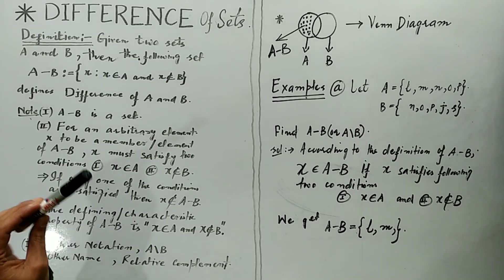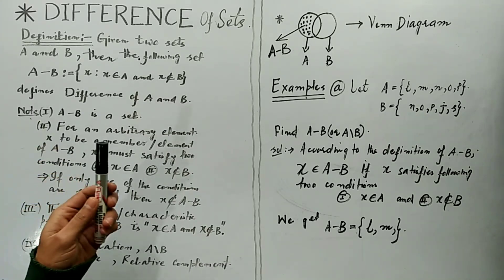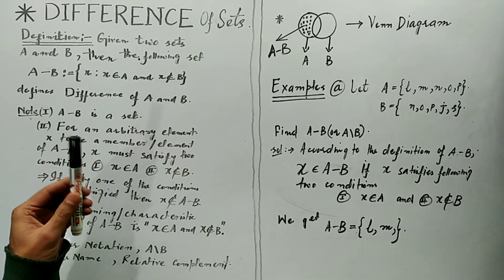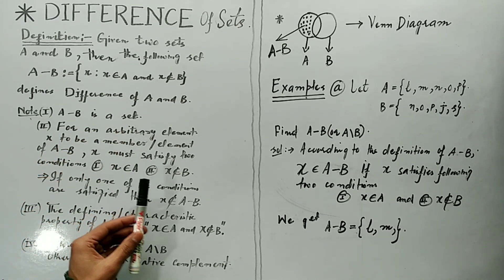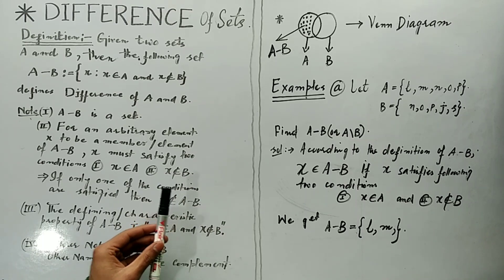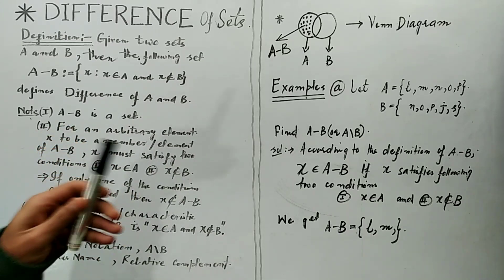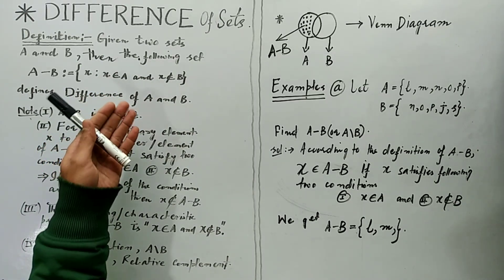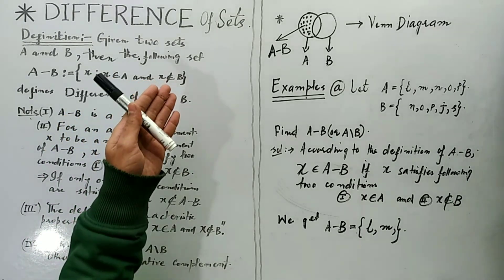If I have an arbitrary element and I want to know whether it belongs to the set A minus B or not, according to the definition the element X must satisfy this property: X must belong to A and X must also not belong to B. The members of a set share a common property which we call the defining or characteristic property. For the difference of two sets, the defining property is: X belongs to A and X must not belong to B.